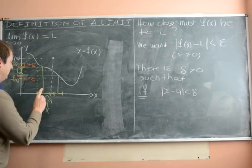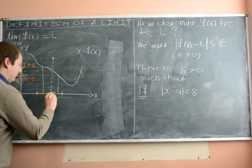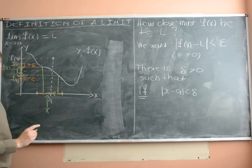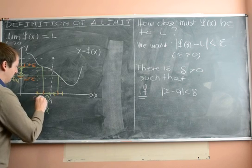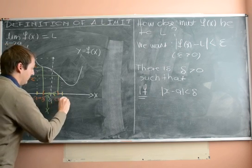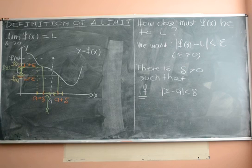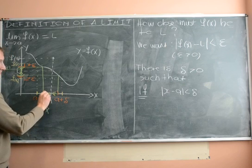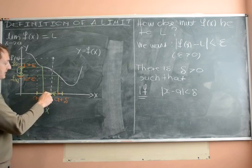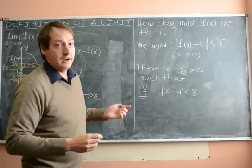So that means here that we have this little interval around a, from a minus delta to a plus delta. In other words, if you pick x in here, then the absolute value of x minus a will be less than delta.